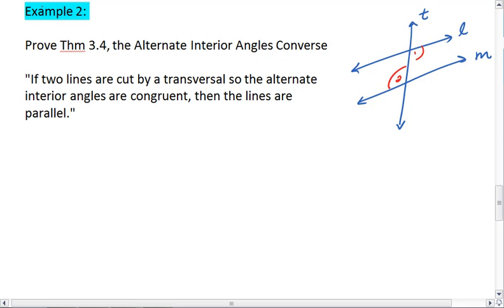Okay, for this proof, let's start by figuring out what we are given. We already are given lines L and M cut by transversal T. We also are given that angle one is congruent to angle two.